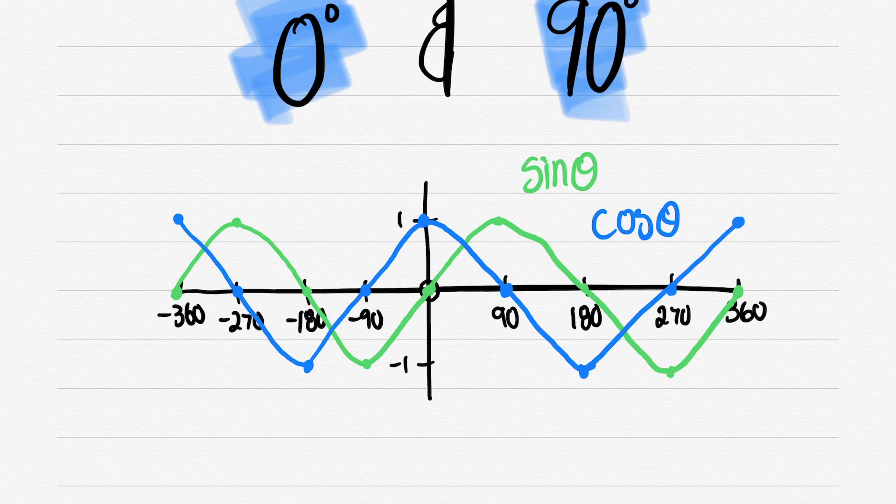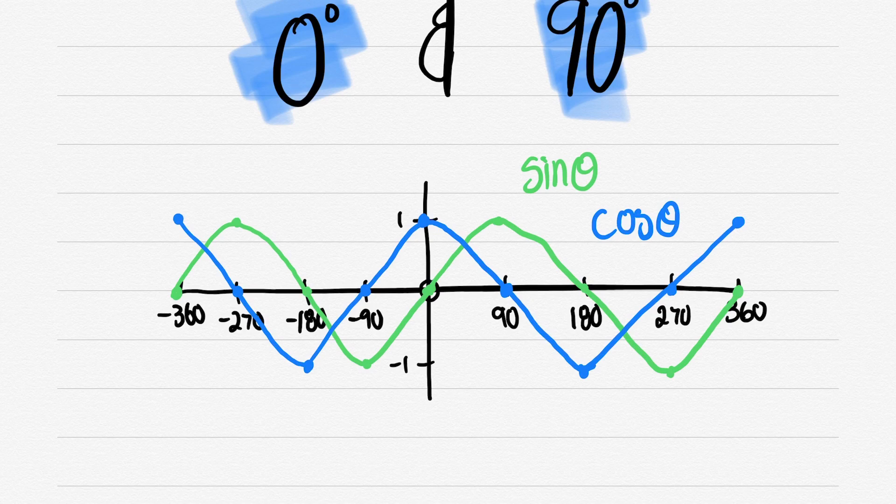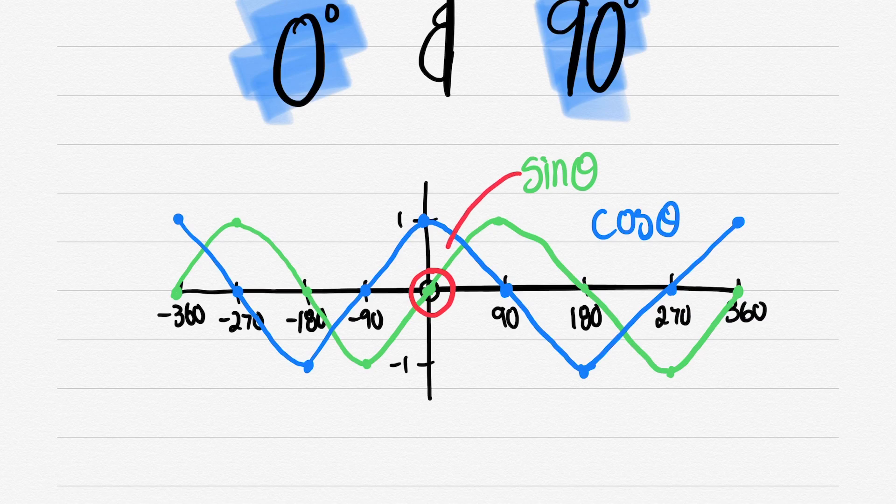Now tell me something. If we had to shift the sine graph 90° to the left, surely that would cover the cosine graph? Isn't that something that's quite interesting to see? Just think about that.